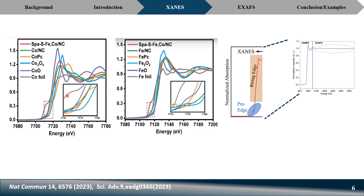One key point: if the plot is at lower energy, the material has a low oxidation state; if the plot is towards higher energy, the material has a high oxidation state. For example, cobalt foil has zero oxidation state and appears at the lowest energy in the spectrum. Cobalt oxide appears at the highest energy. If your material's peak is located between these two, you can claim its oxidation state is between zero and +2.